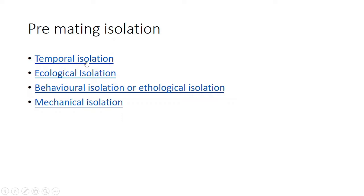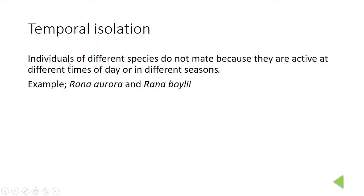Pre-mating isolating mechanisms can be studied under four headings: temporal isolation, ecological isolation, behavioral isolation, and mechanical isolation. First, we talk about temporal isolation. Suppose an individual of one species is diurnal and an individual of another species is nocturnal — this type of isolation is called temporal isolation.